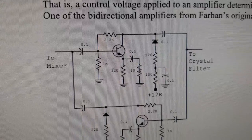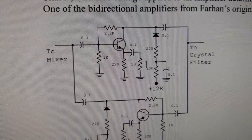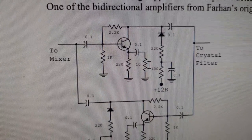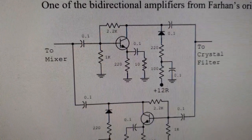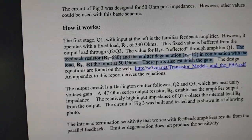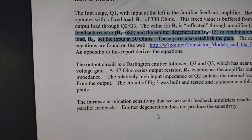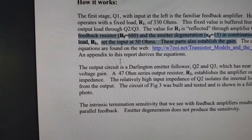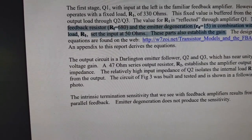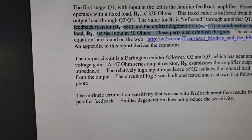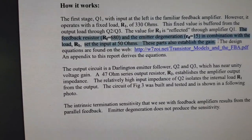Bill pointed out that if you changed the emitter degeneration resistor, the gain would be affected. But there might be other side effects as well. And sure enough, a couple of pages down, we read that the feedback resistor and the emitter degeneration resistor, in combination with the load, set the input at 50 ohms. These parts also establish the gain.